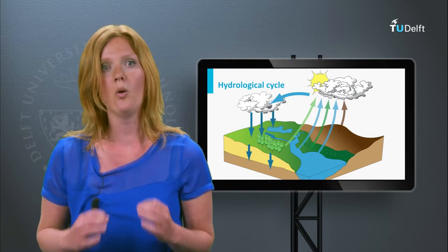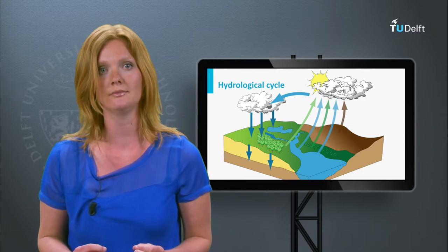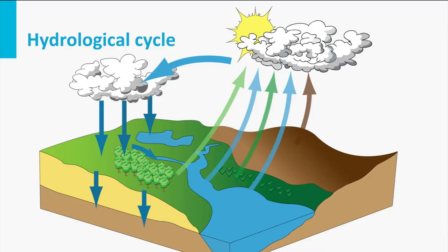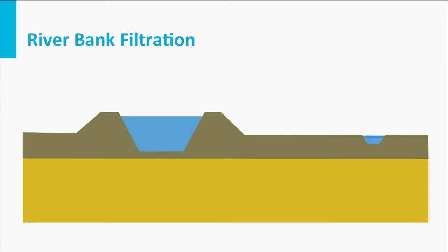Before we discuss water treatment schemes, I will provide a short overview of different groundwater sources. Groundwater is always connected to surface water. After all, groundwater eventually becomes surface water within the hydrological cycle in seas, lakes, or rivers. This interaction can also be accomplished artificially when groundwater is abstracted close to surface water, for example during riverbank filtration, or when surface water is transported to groundwater systems like during managed aquifer recharge.